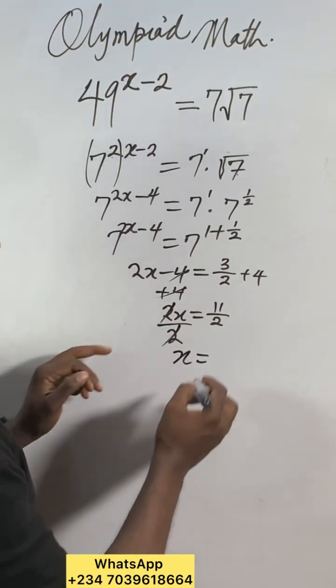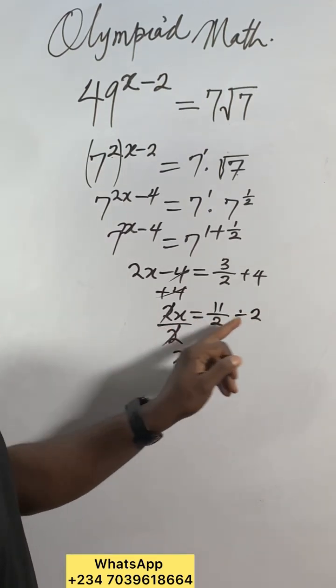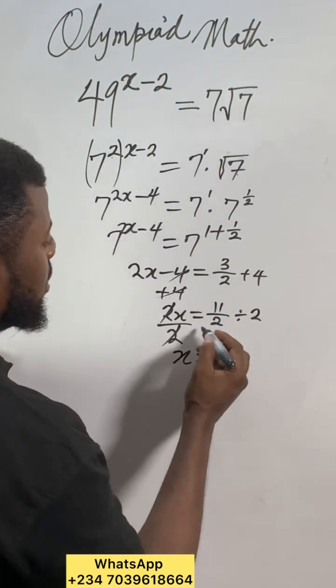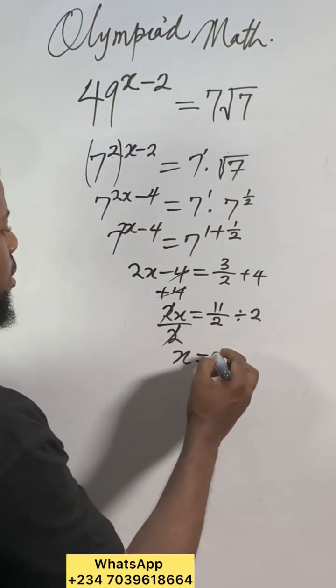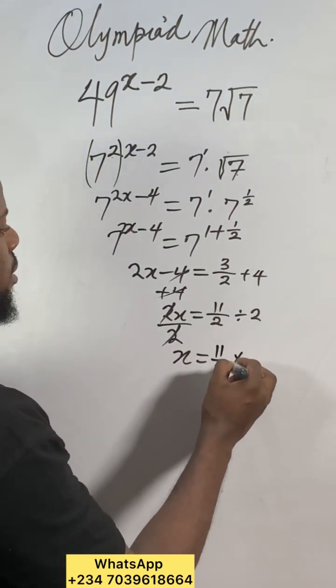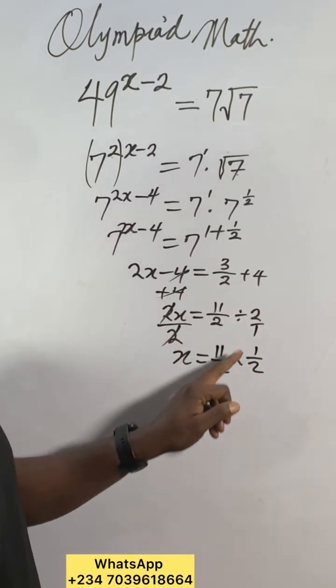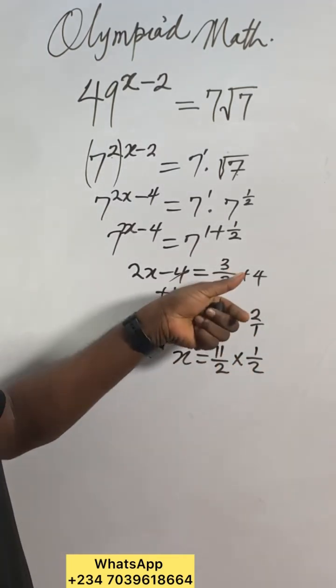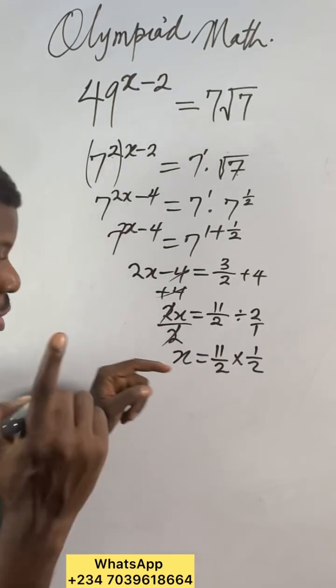x will equal... if I divide both sides by 2, it cancels here. And here, 11 over 2 divided by 2 is the same as 11 over 2 times 1 over 2. When you change division to multiplication, you flip this thing upside down.